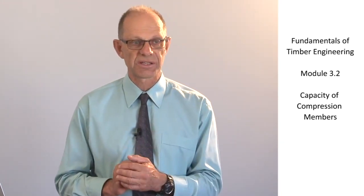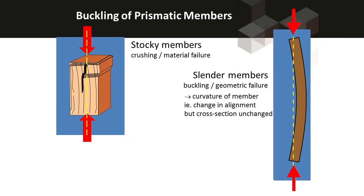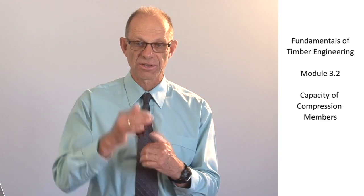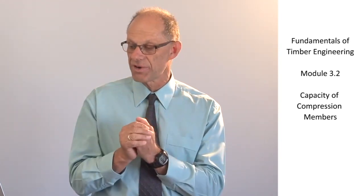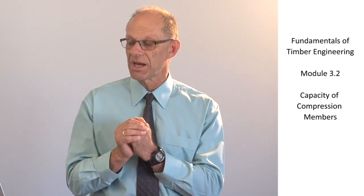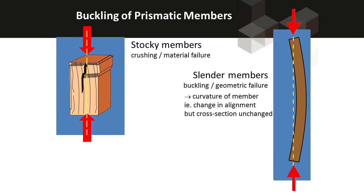There are two distinct failure modes. The first one is failure of stocky members, where the material actually crushes as the load is applied. If you look at that animation, you can see where the material is crushed, and you can see that the centre line of the member remains straight, so the member has simply shortened as individual fibres in the member have crushed.